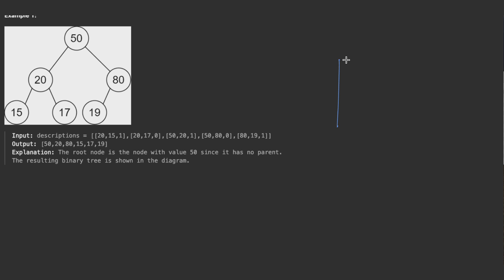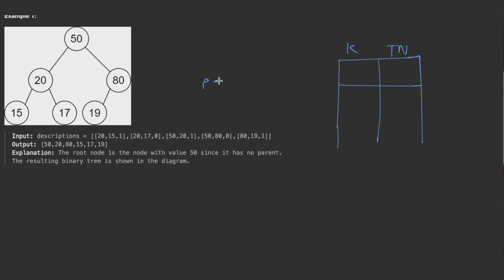Now let's do a dry run. We'll use a hash map where the key is the node value (an integer) and the value is the TreeNode itself. Since all values are unique, this works perfectly. In the first iteration, the parent has value 20 and the child has value 15.